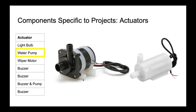A water pump can also be used in an automatic fire detection and prevention system. In the previous sensors video, I had mentioned something known as a gas sensor. So if the gas sensor is detecting smoke in a room, that means there is fire. Using a pump, we can sprinkle water and turn off the fire.